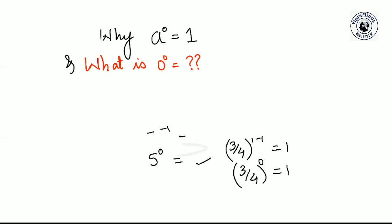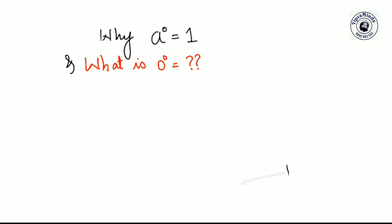Now, what will be 0 raised to 0? First of all, what is 0 divided by 0? Well, 0 divided by 0 could be 1, or 2, or 3, or 5, or 10,000 — there are multiple possible answers. So any answer you pick, there is no single determined value.